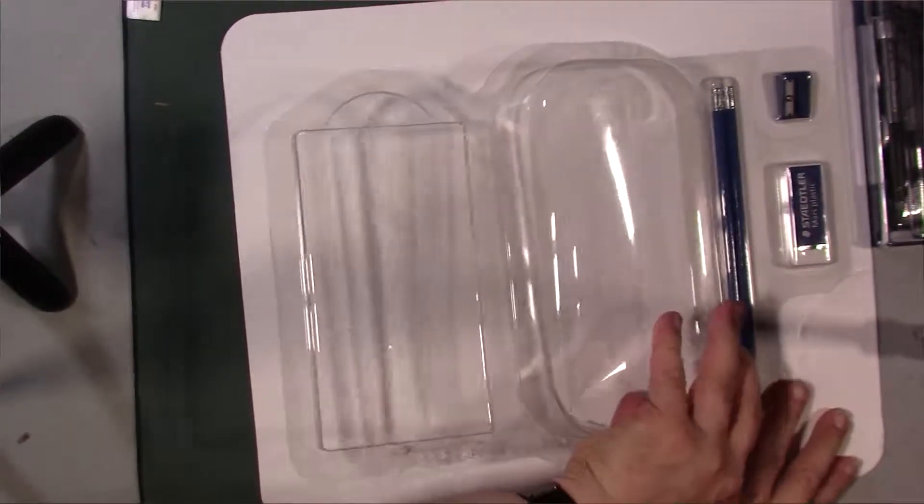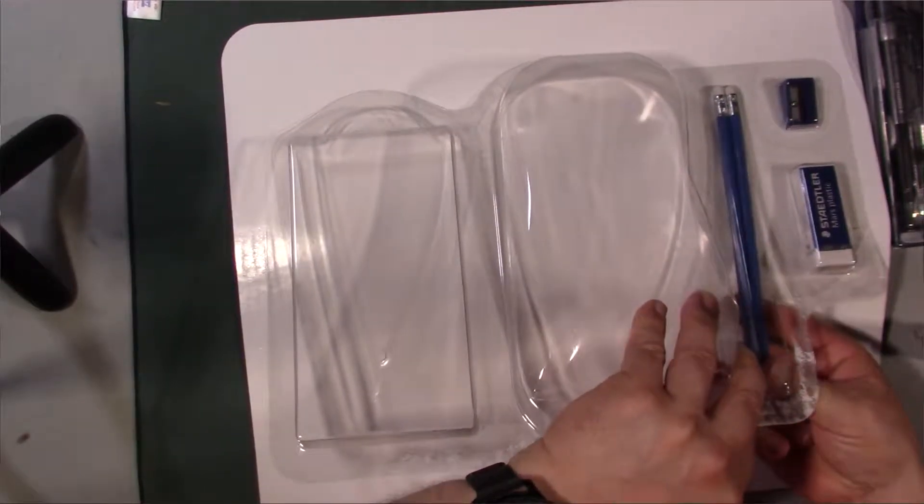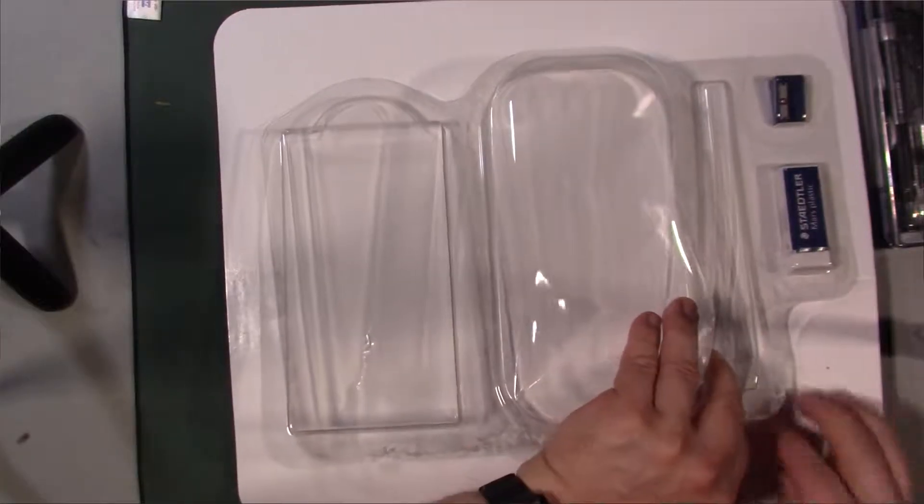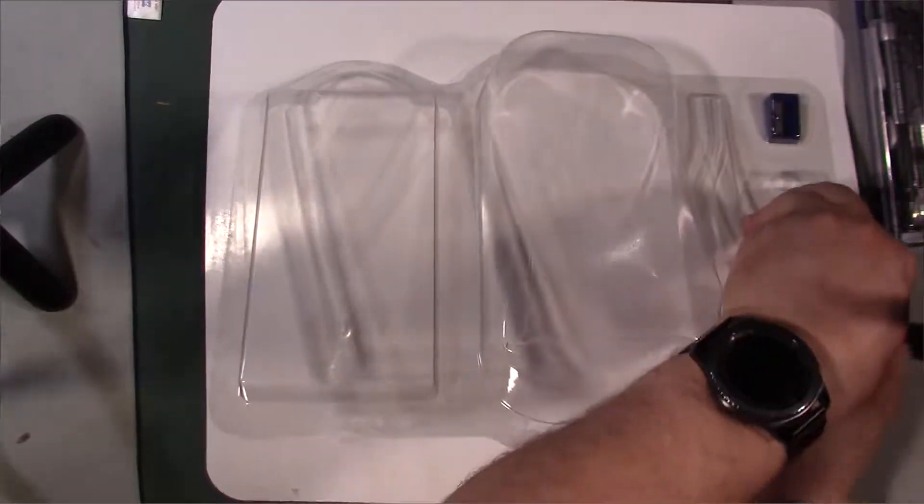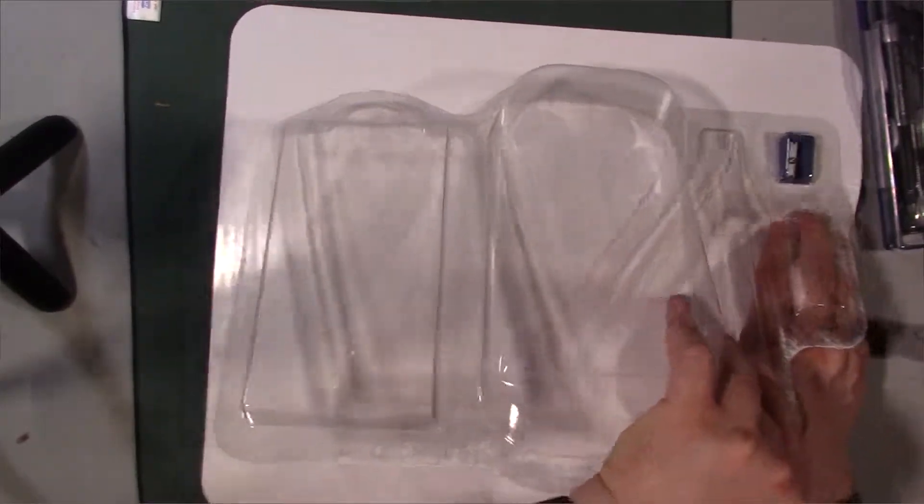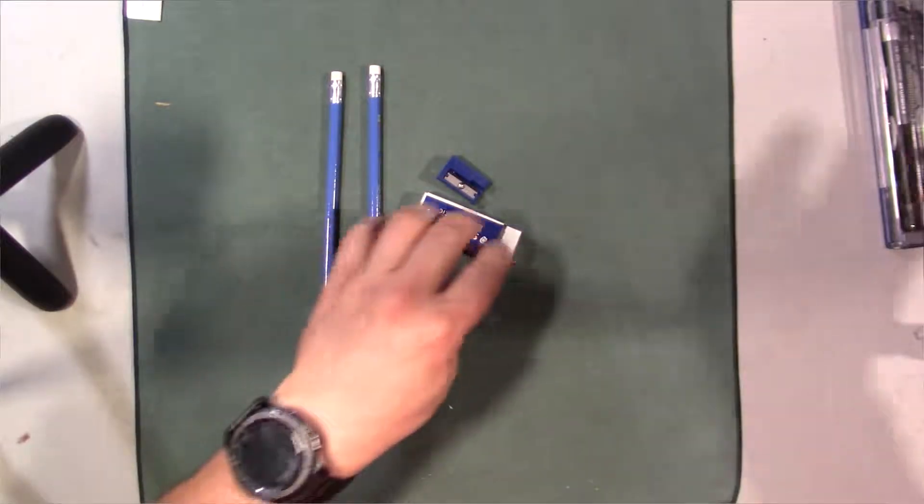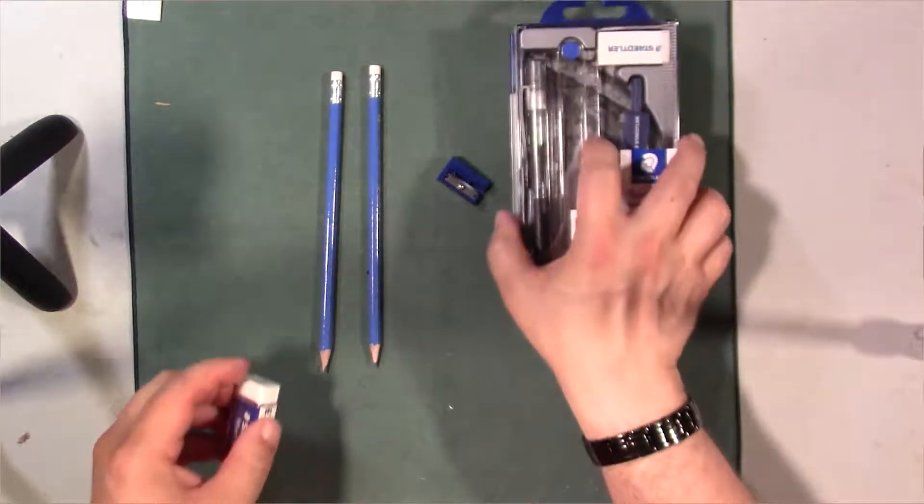Let's get out the rest of the stuff here. Okay, eraser, and I'll get the sharpener too. Alright, wow, that was actually the most difficult unboxing I've ever done. Okay, so there's the two pencils, the sharpener, the case.